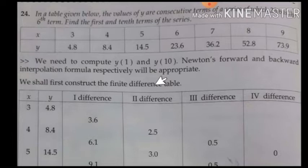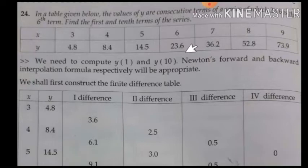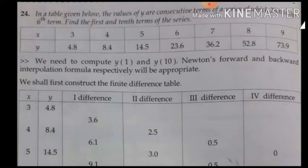We are coming across problems related to Newton's forward and backward interpolation formula. In a given table, the values of y are consecutive terms of a series of which 23.6 is the sixth term. Find the first and tenth term of the series — the first term is before position 3 and the tenth term is after position 9.